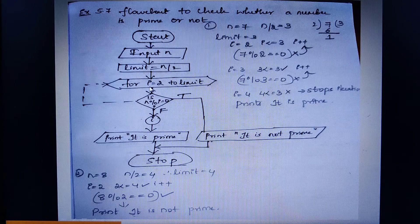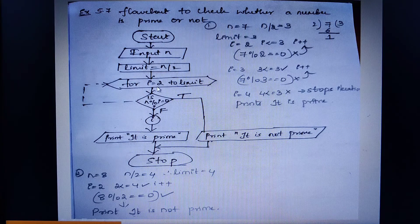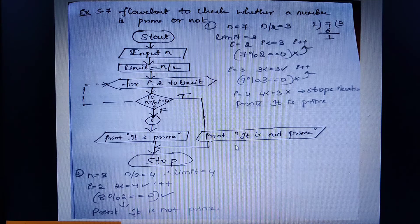I am using a for loop since the loop has to iterate a fixed number of times. I initialize i equal to 2, not 1, because every number is divisible by 1. The loop runs from i=2 up to limit. When i equals 2, I check whether n mod i results in 0. If the condition is true, it prints 'not a prime number'; else it prints 'it is a prime number'.